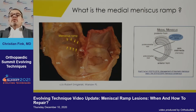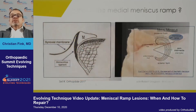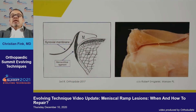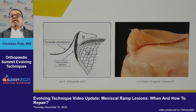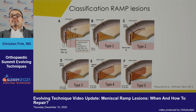When we talk about the medial ramp, it's really the posterior medial aspect of the medial meniscus, and it's a very distinct part of the meniscus. The attachment in this area is really just on the tibia — the meniscus tibial ligament — and there is a synovial membrane which is attached superior to the meniscus here.